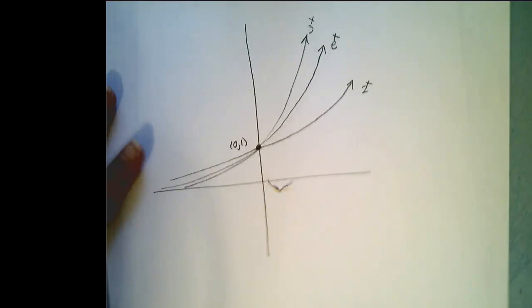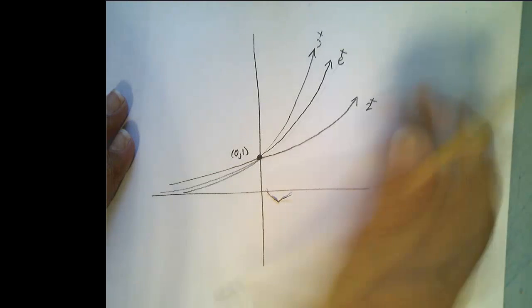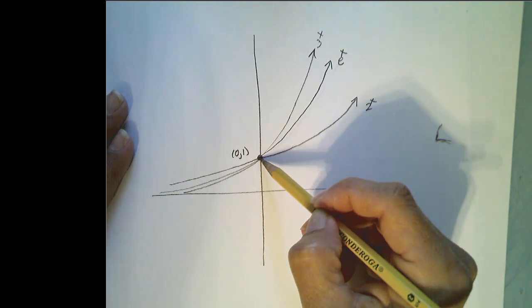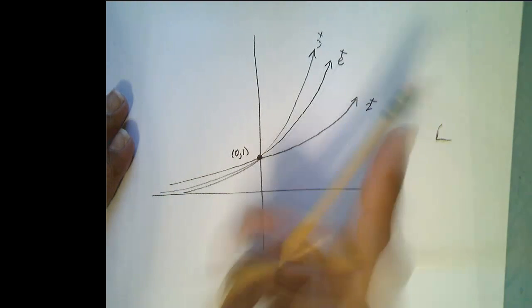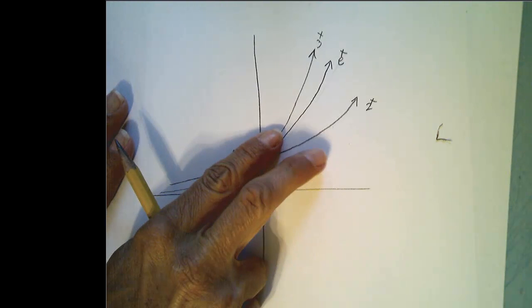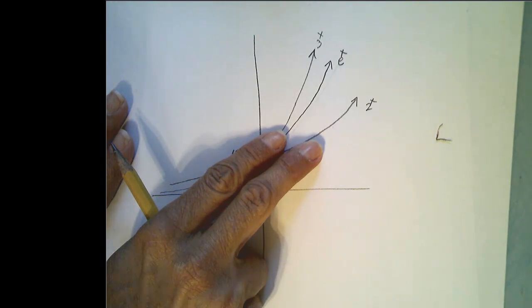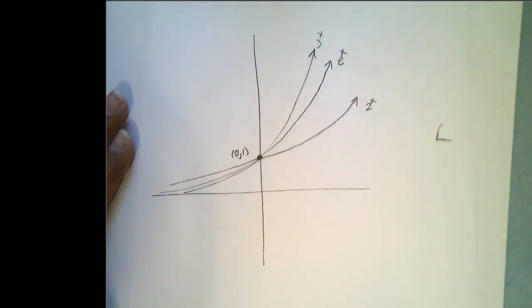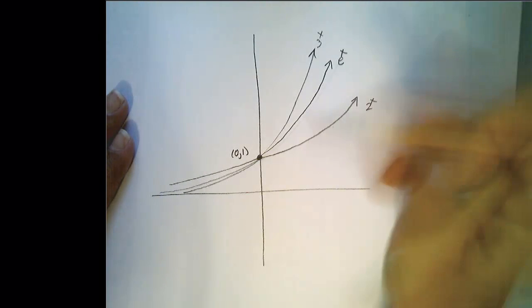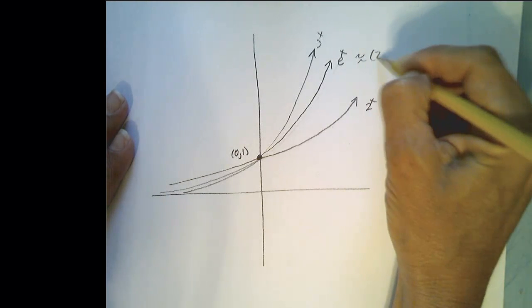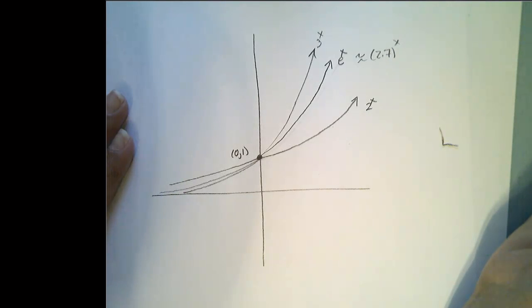So if we looked at the graph of e to the x, it's an exponential graph that passes through the point 0,1, and it sits between 3 to the x and 2 to the x, and it's closer to 3 to the x than 2 to the x, right, because e is about 2.7 to the x. Alright,